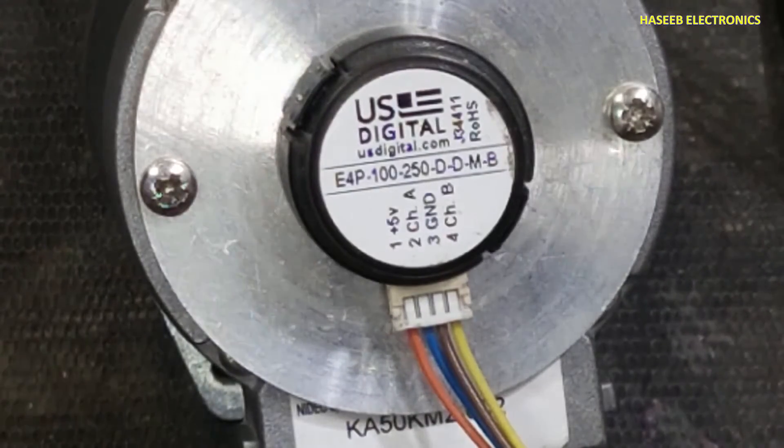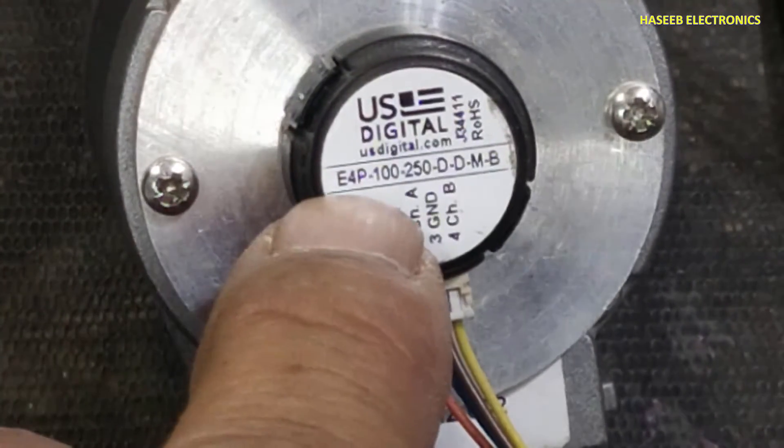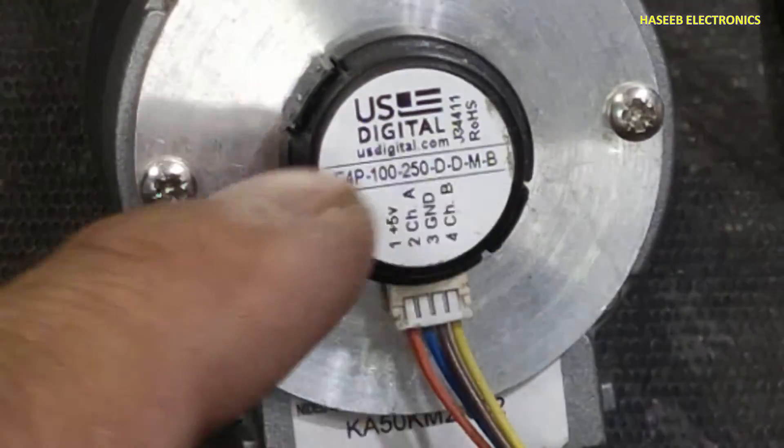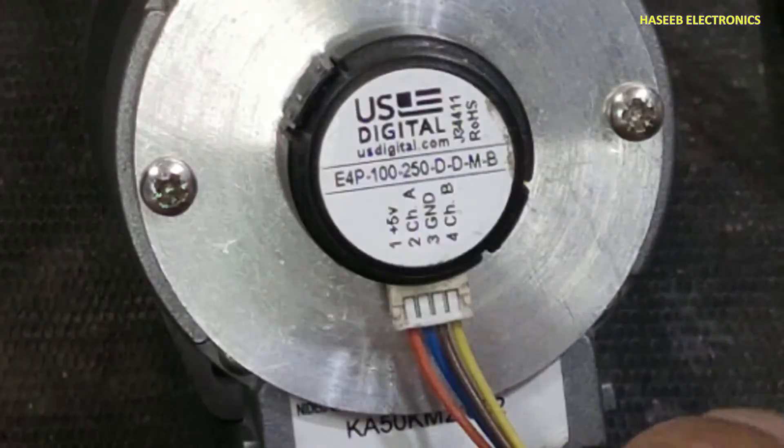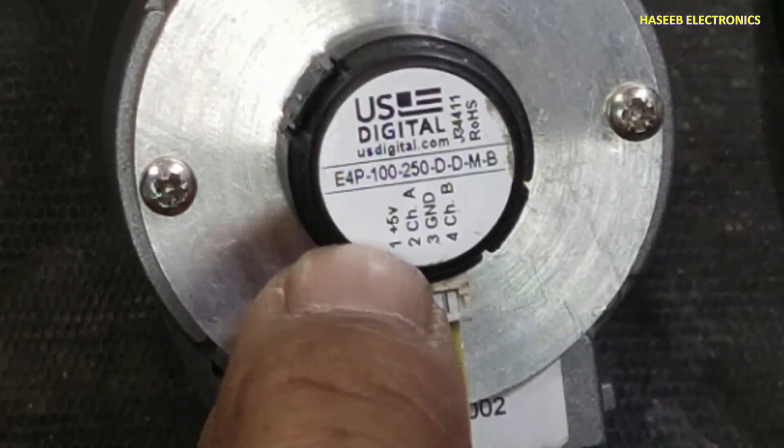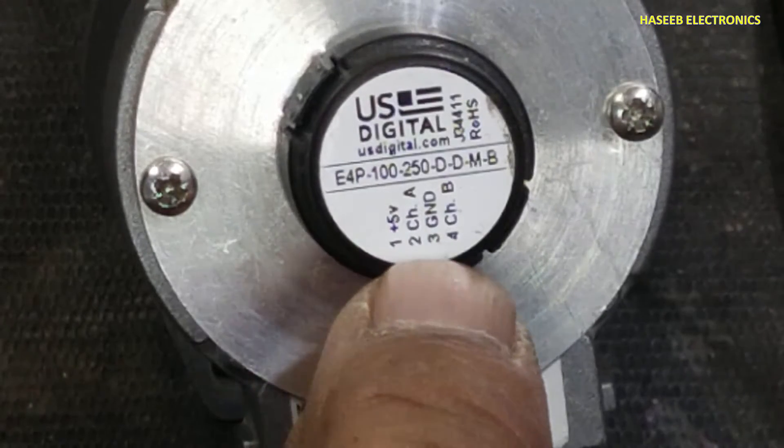Assalamualaikum warahmatullahi wabarakatuh, friends, welcome back to my channel. How we can test E4P series optical encoder? It is from US Digital. It is a four-pin optical encoder supplied with five volts. Pin one is positive five volts, pin two is channel A.